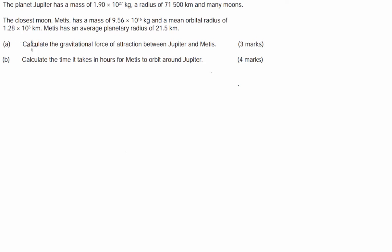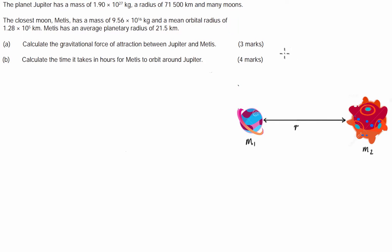So what we've got here is two bodies separated by a particular radius. To find the gravitational force of attraction between Jupiter and Metis, we're going to use Newton's law of universal gravitation, which states that if we have two point masses separated by a particular radius, the force of attraction is equal to some constant times the product of the two masses divided by the distance between them squared.